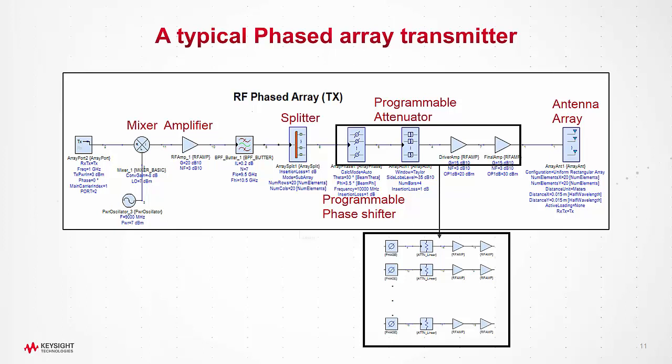Let us see a phased array transmitting block diagram. As shown here, we have 1 GHz IF being upconverted to 10 GHz and then split into 400 different channels. Each channel being phase-shifted, attenuated, and amplified before each channel is connected to a single element of the array.